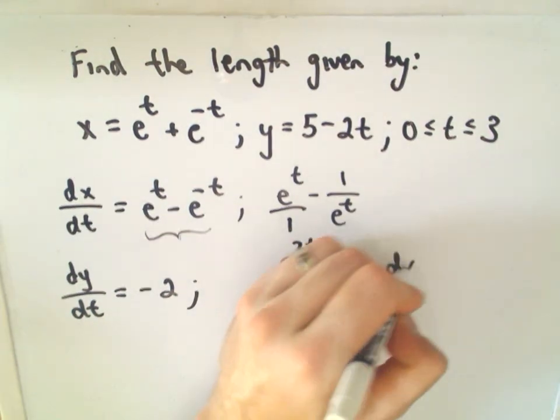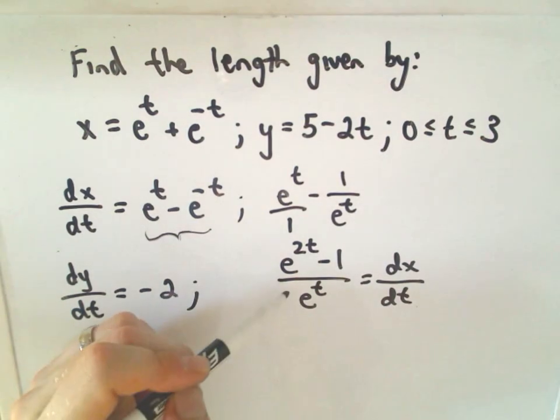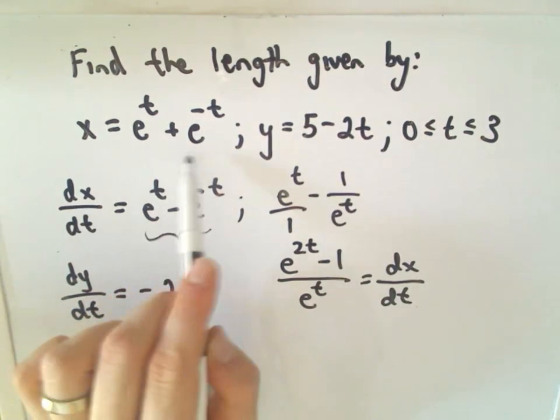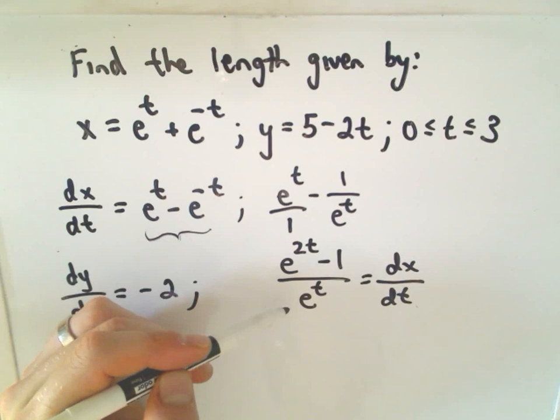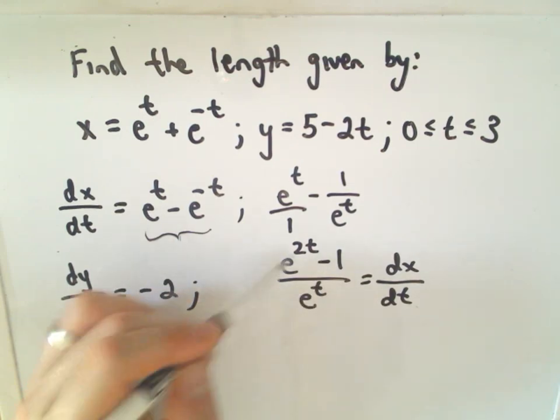Okay, so again, this is dx dt. So, to find the critical numbers, remember the critical numbers are points in the domain of the original function where the derivative is either undefined, which means we would have to divide by 0. But e to anything is never 0. So, there's no point that's going to make the derivative undefined.